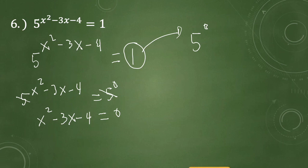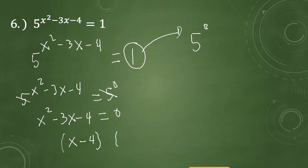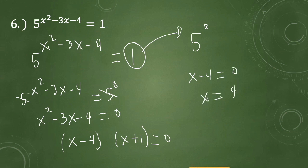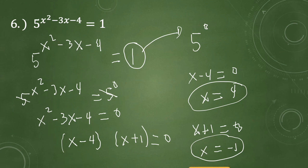Before using the quadratic formula, let's try to factor first. We need factors of negative 4 that sum to negative 3. The factors are x minus 4 times x plus 1. Setting each factor equal to 0: x minus 4 equals 0 gives x equals 4, and x plus 1 equals 0 gives x equals negative 1. So we have two answers for example number 6.